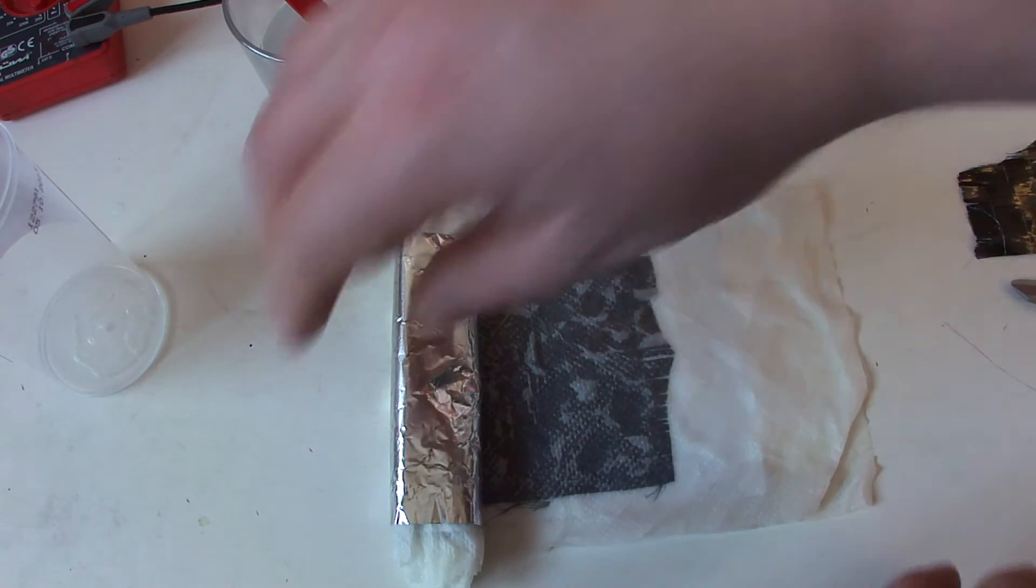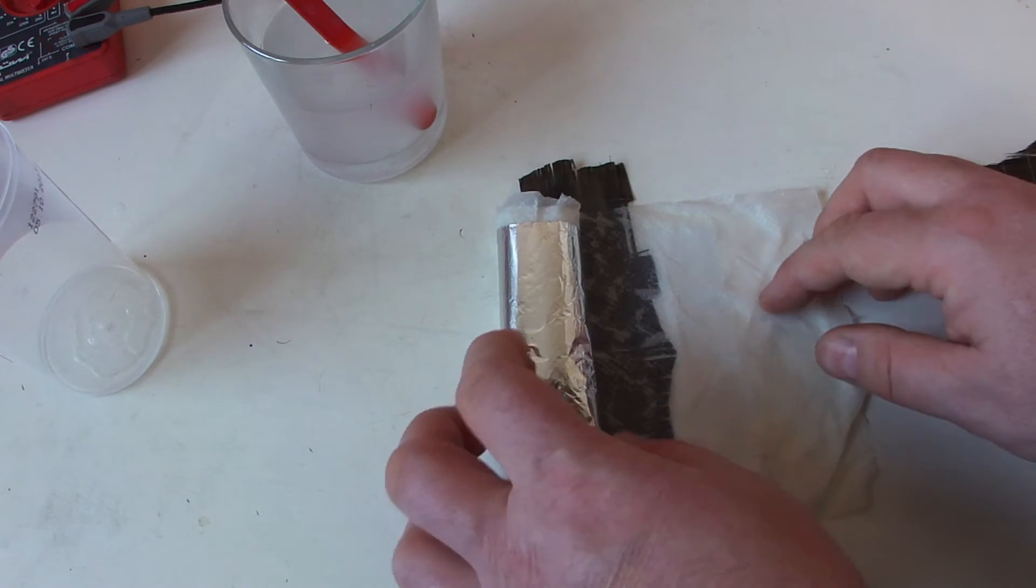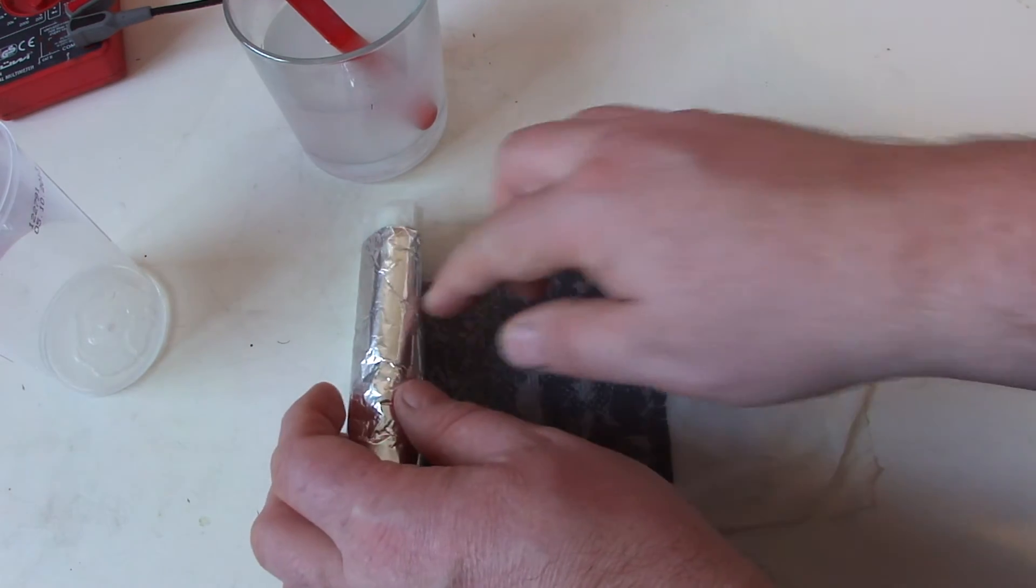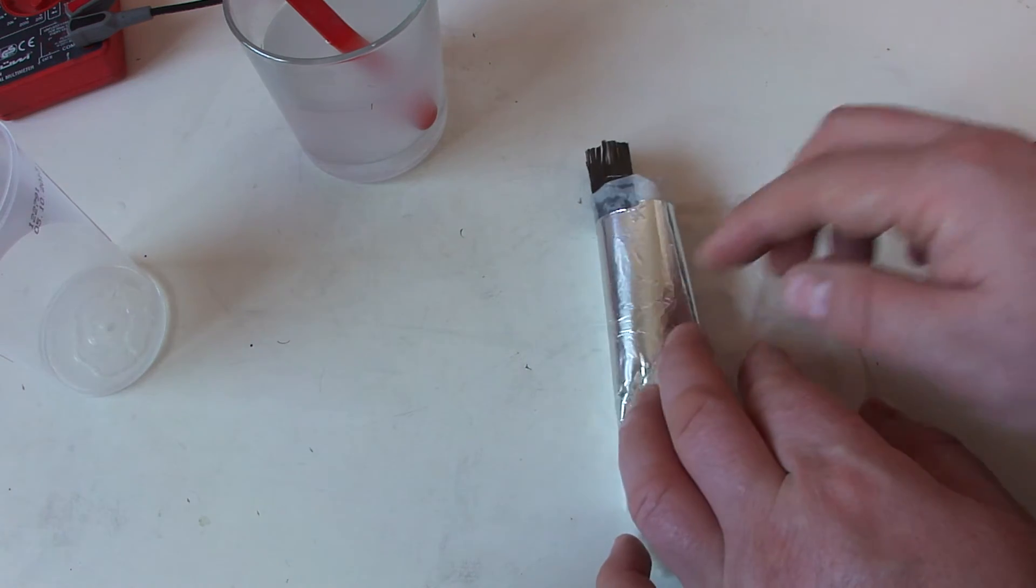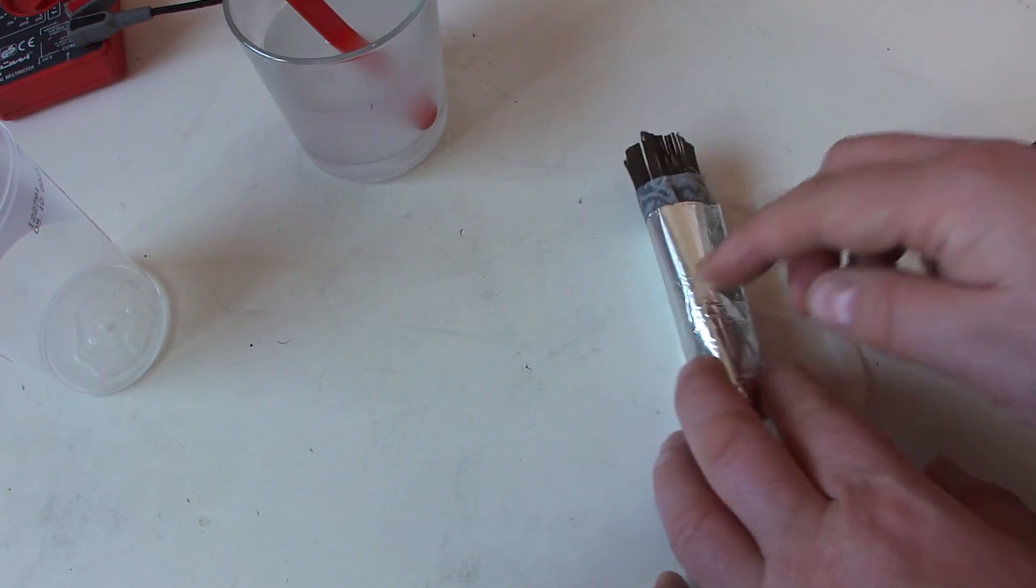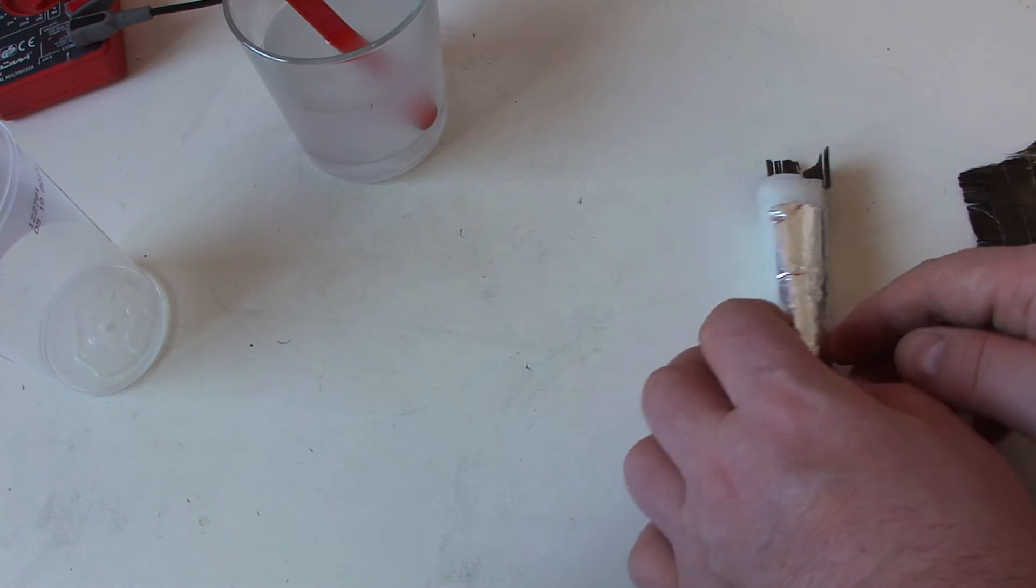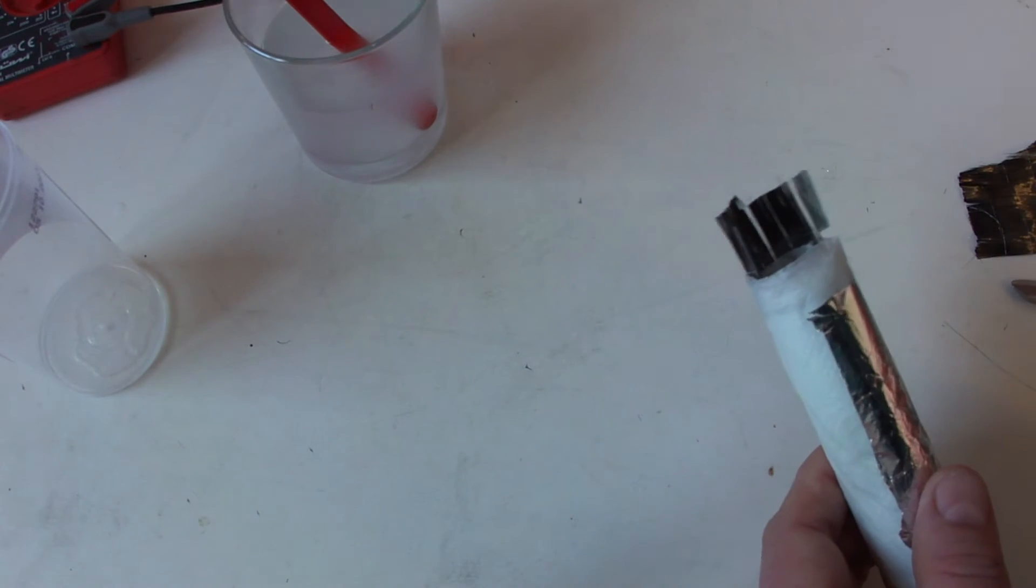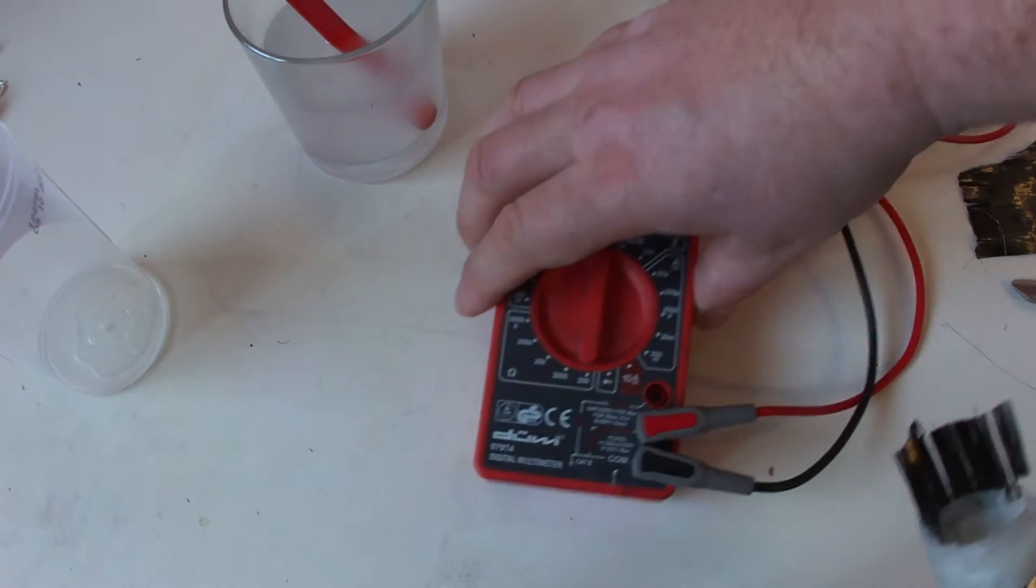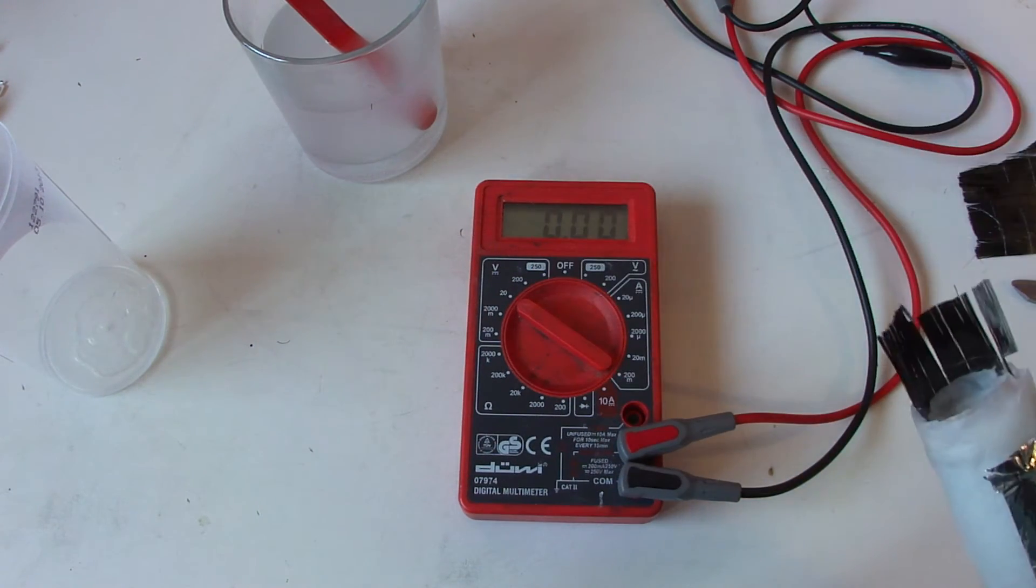Also good would be silver coated wires. Okay, I think this way it will work. Oh, let's see what kind of voltage we will get now.